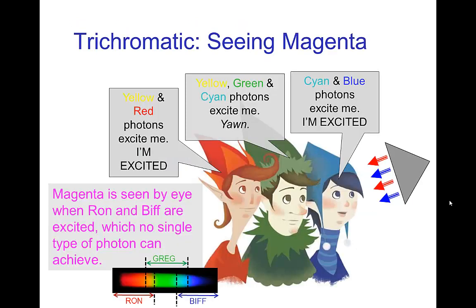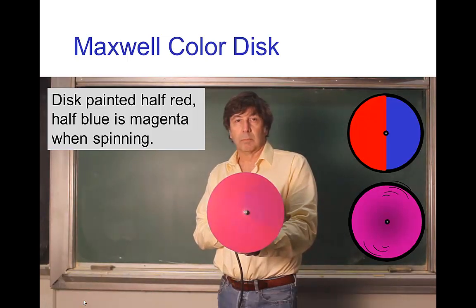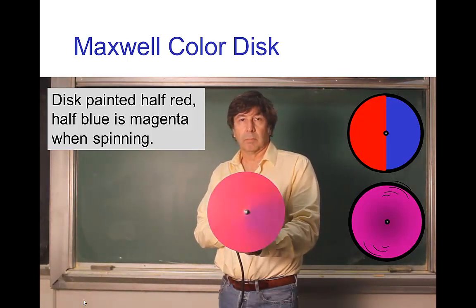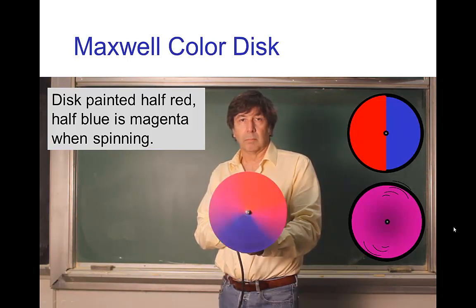Another thing we can understand using trichromatic theory is these non-spectral colors. When we see magenta, that is when Ron and Biff are both excited but Greg is not. When we look at the spectrum, there's no single type of photon that will simultaneously excite Ron and Biff — the only way to do that is with a blend of red and blue photons. We can see this in a Maxwell disc: a disc painted red and blue, and when it spins rapidly you see both simultaneously — and that is magenta.